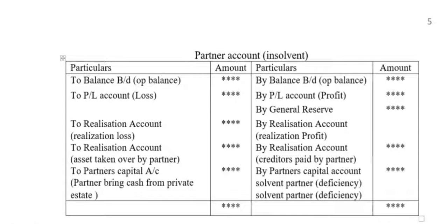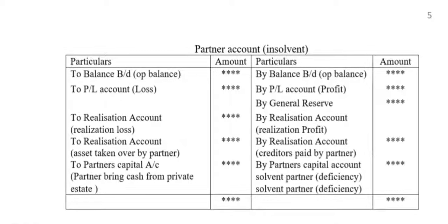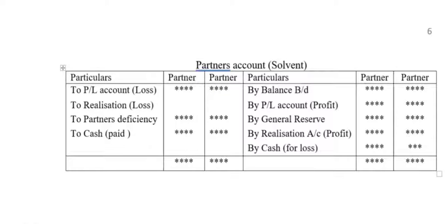Similarly, on the credit side of Partners' Capital Account: opening balance, profit and loss — profit, general reserve, realization account. On the debit side: realization account — creditors paid by the partners, and the solvent partner's deficiency. For solvent partners, this is the final settlement — profit and loss, realization loss, partner's deficiency, balance. Breakdowns include: profit or loss, general reserve, realization account figures, and cash paid or received in settlement.